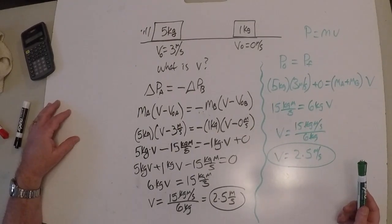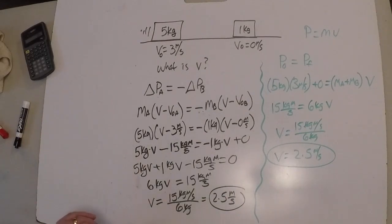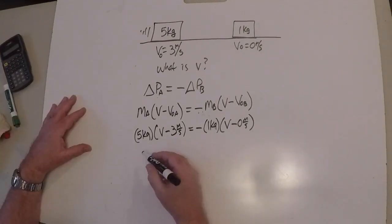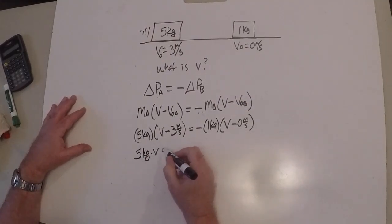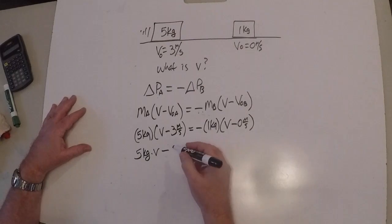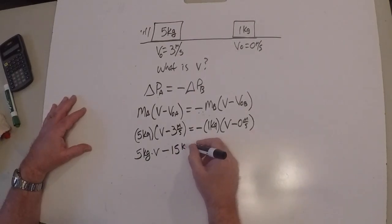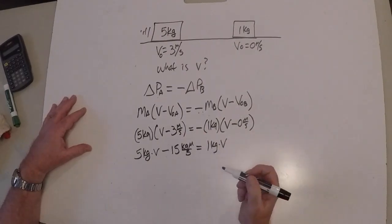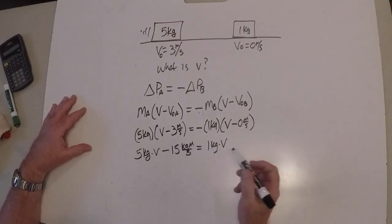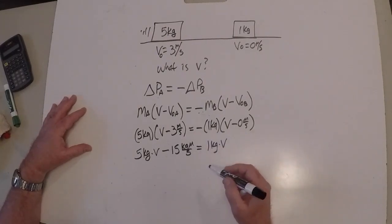Personally I like the conservation method better because it's a little bit quicker and easier to deal with. So next we'll take a look at an elastic collision. Setting it up: 5 kilograms times V minus 3 times 5 is 15 kilogram·meters per second, and this equals 1 kilogram times V. You might wonder why we put that 1 kilogram there, but the units are important. And 1 kilogram times 0 is just 0.